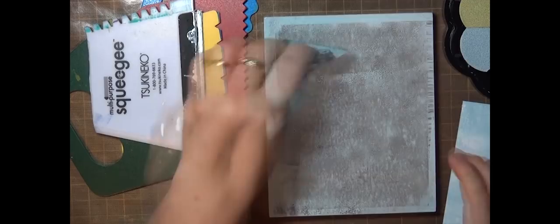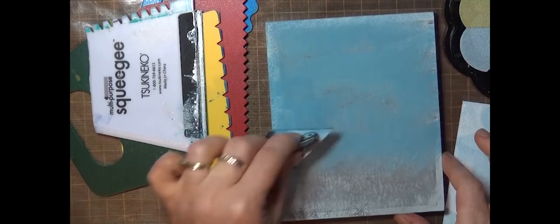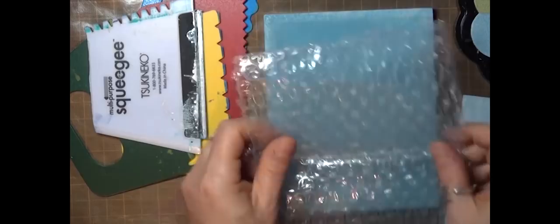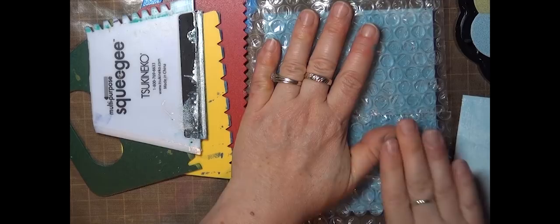So there's my first layer. For the next layer I'm going to use a darker shade of blue and cover the panel, but this time I want to add some texture to the ink by lifting some of it away. I'm going to lay this piece of bubble wrap into the ink, and the ink is going to stick to the plastic and pull away.